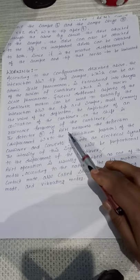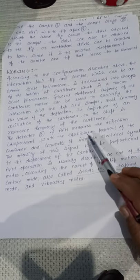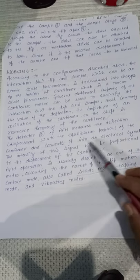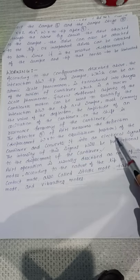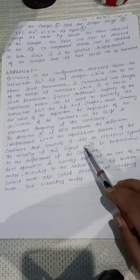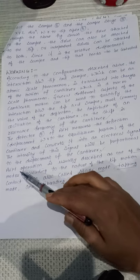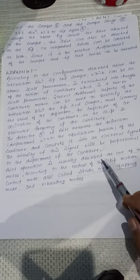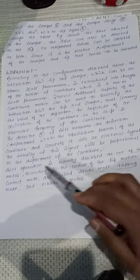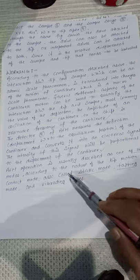The detector of AFM measures the deflection, i.e., displacement with respect to equilibrium position of the cantilever, and converts it into an electrical signal. The intensity of this signal will be proportional to the displacement of the cantilever. AFM operation is usually described as one of three modes according to the nature of tip motion: contact mode (also called static mode), tapping mode, and vibrating modes.